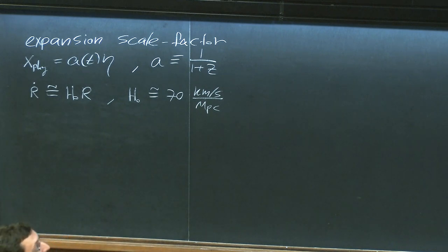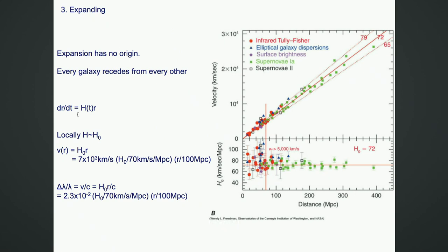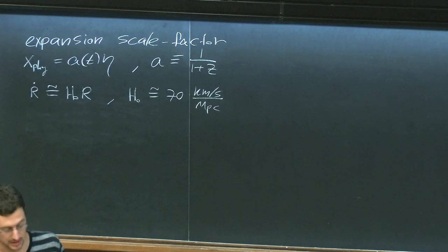Here is the correlation between the distance of one of those galaxies from us and the velocity at which it is seen to recede from us by measuring the Doppler effect. The slope here — you see 72 — is just this Hubble coefficient. These are relatively nearby galaxies, so they are measuring the very recent history of the universe: the Hubble rate at time t-naught, today.